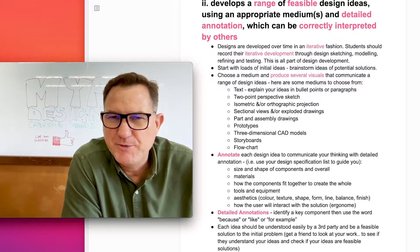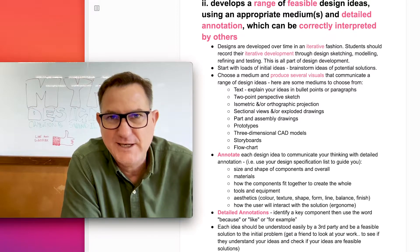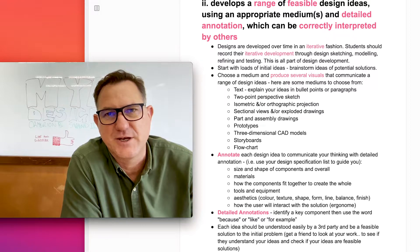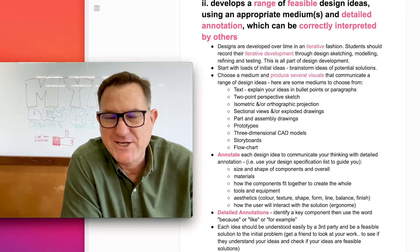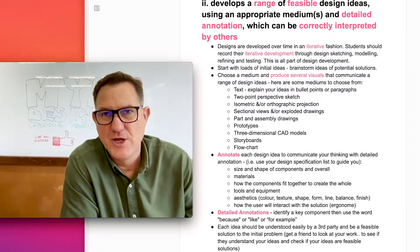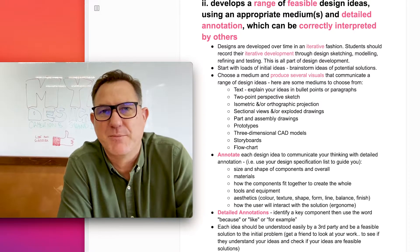But right now you're probably still not completely sure what your product is going to look like. This is where Criterion B Strand 2 comes in handy. This is where you start to develop some ideas.